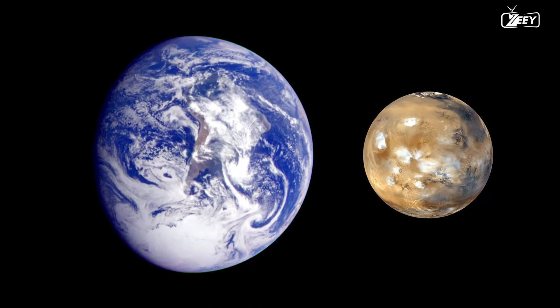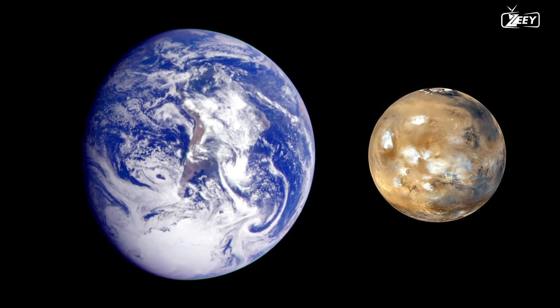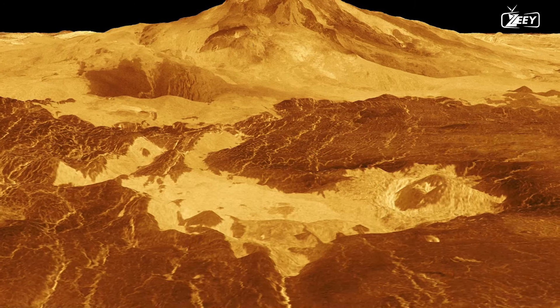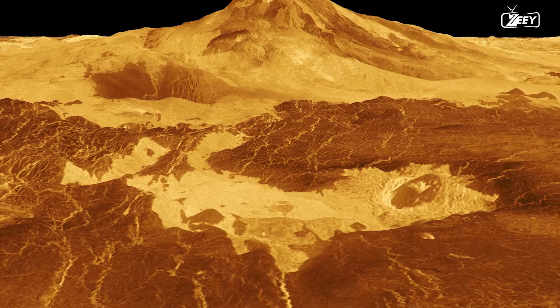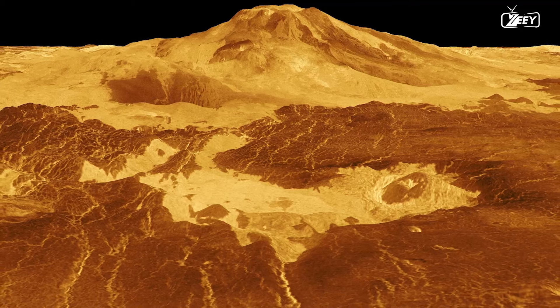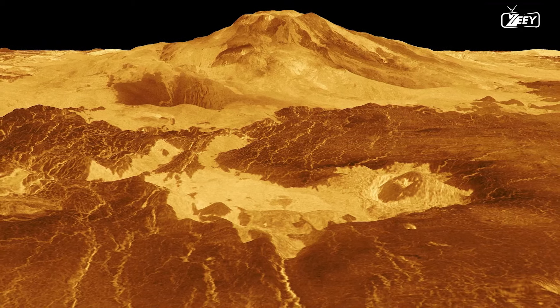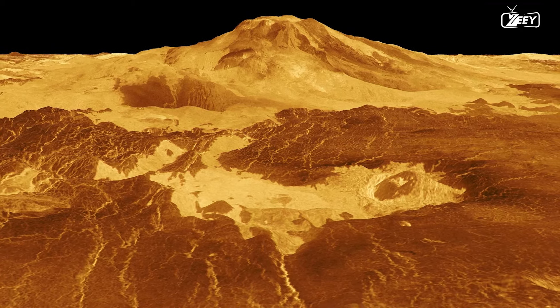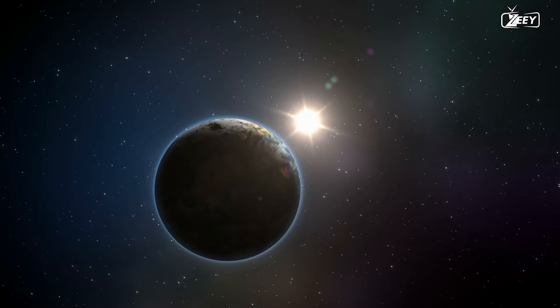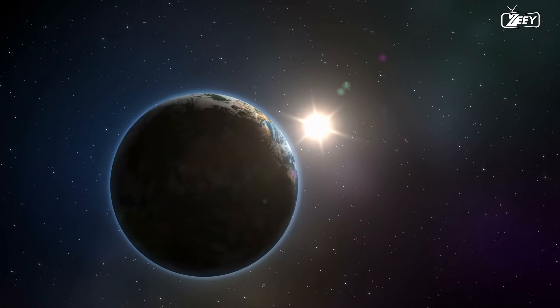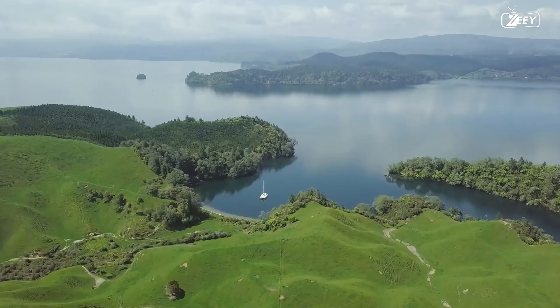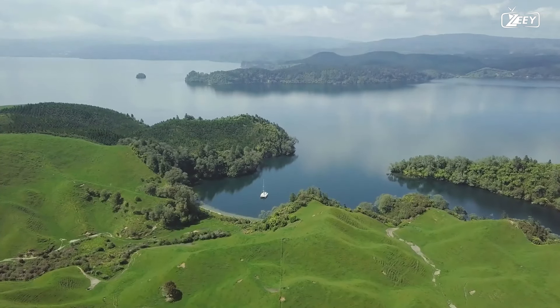In conclusion, while Venus and Earth are comparable in size and composition, their surroundings have been significantly different. Venus has become a hellish environment due to a variety of circumstances, including its close proximity to the Sun, heavy carbon dioxide atmosphere, and unique geological history. Because of its distance from the Sun, the mix of gases in the atmosphere, its progressive geological history, and the stabilizing effects of its huge moon, Earth has maintained a stable environment that is well-suited for maintaining life.